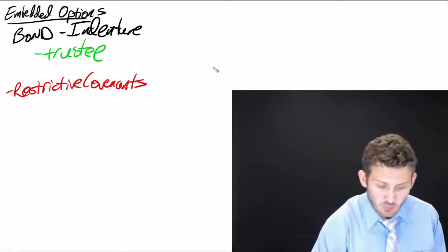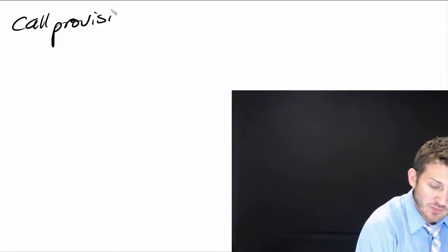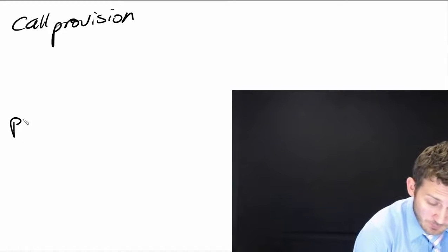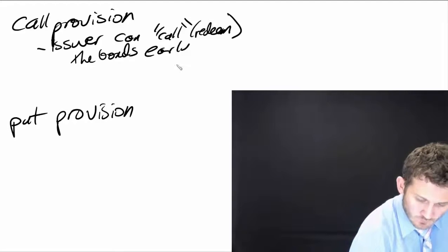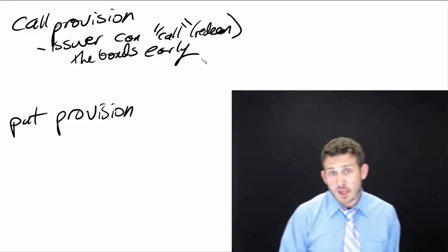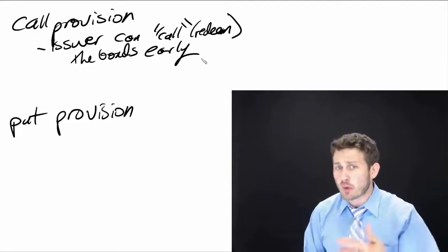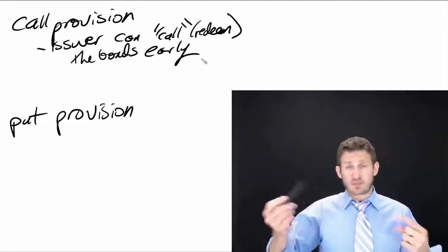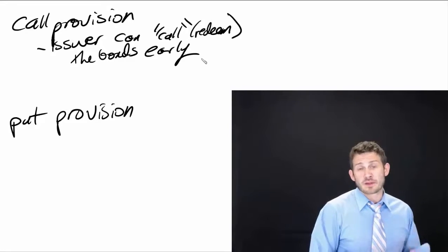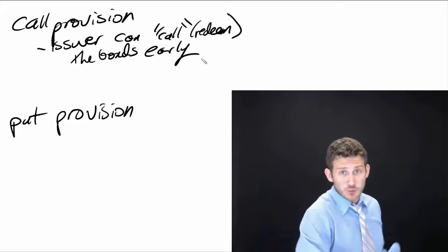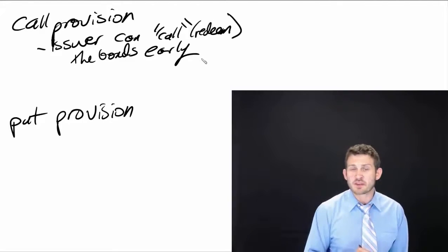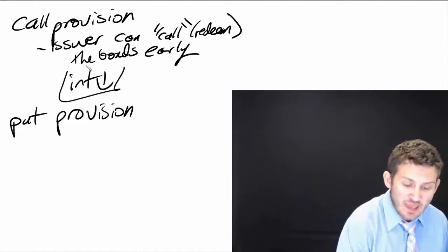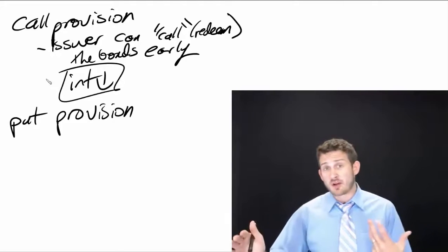Two of the more important embedded options are the call provision and the put provision. A call provision is one in which the bond issuer can call or redeem the bonds early — it's essentially an early repayment option. If interest rates fall, the issuer can refinance: they issue new bonds at a lower rate and pay off the earlier bonds. This is not something investors want, because when interest rates fall their bond gets paid off and they lose their future payments.